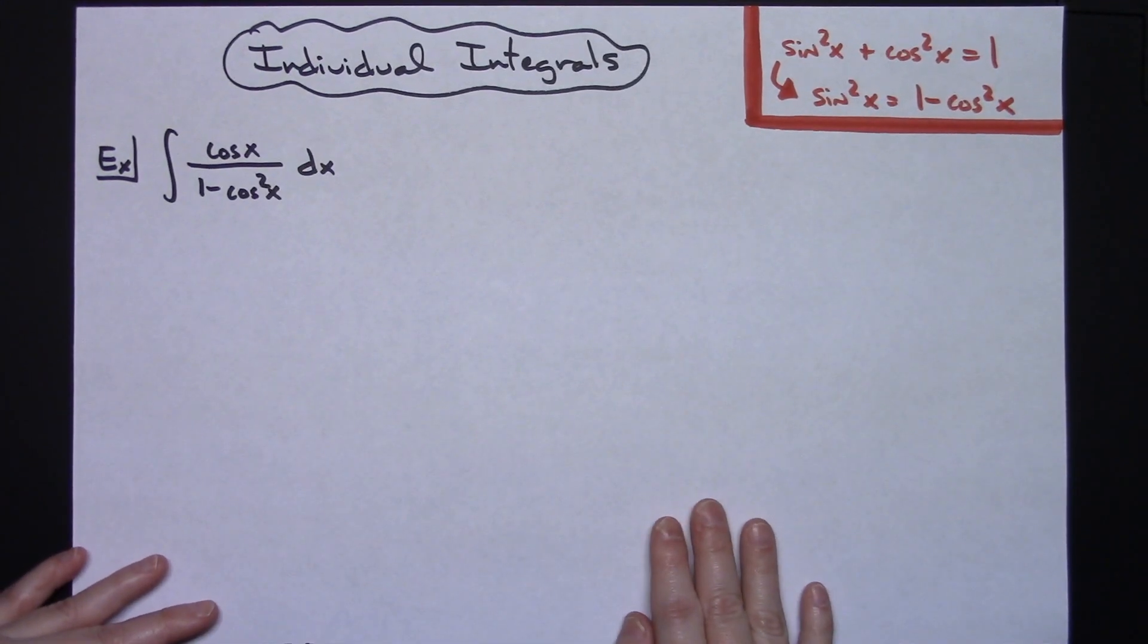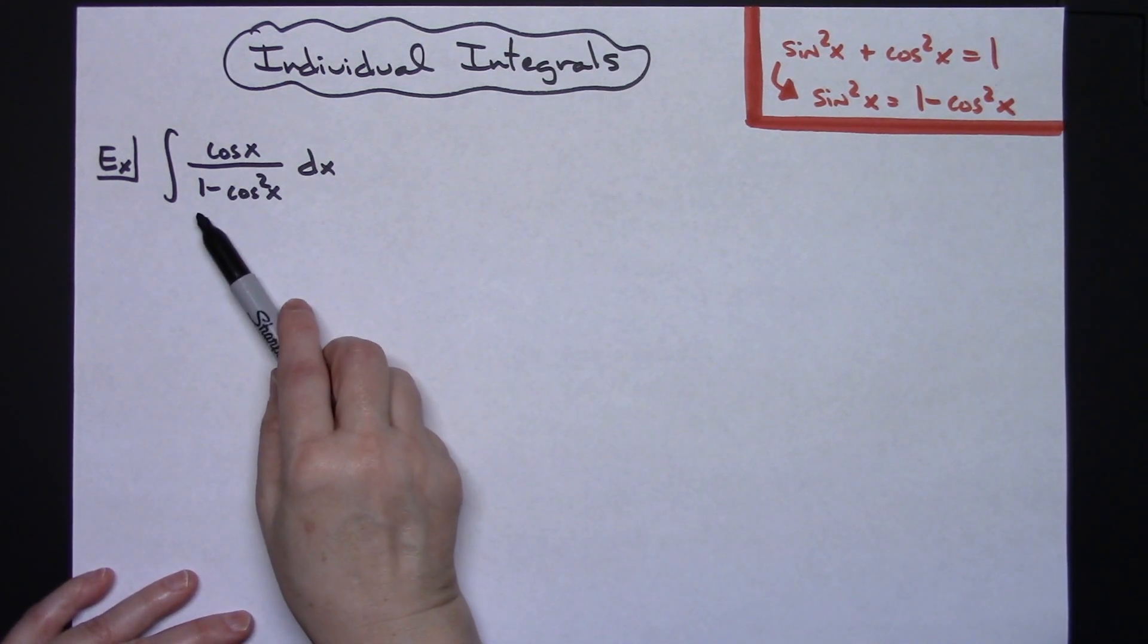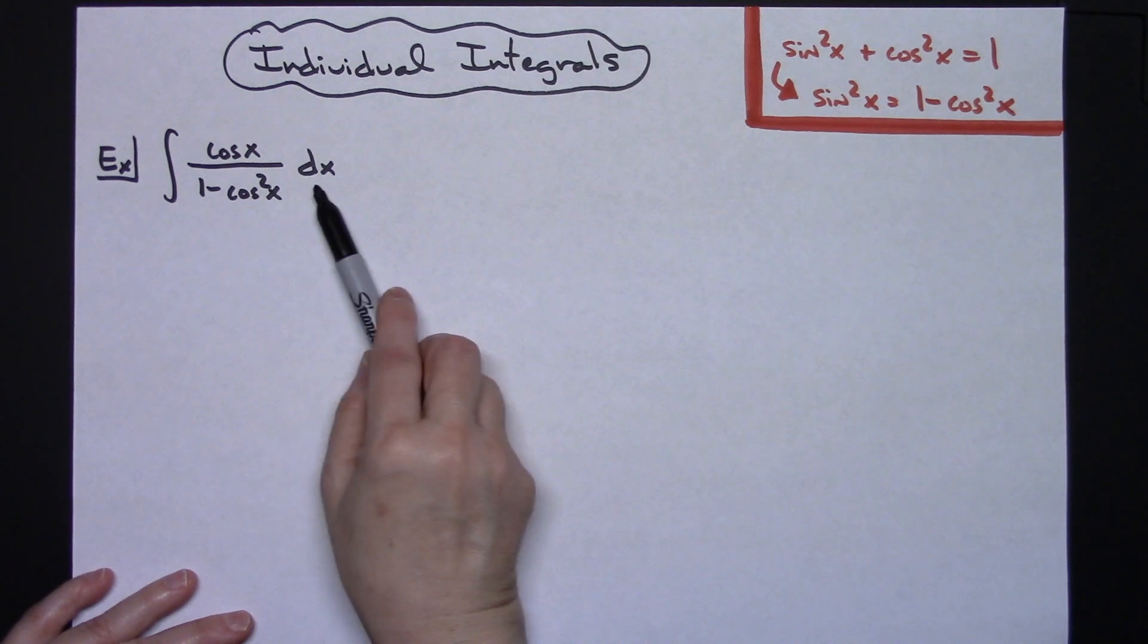In this video I'm going to be working out an individual integral. I'm going to take a look at the integral of cosine x over 1 minus cosine x squared dx.